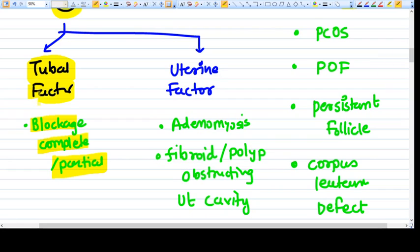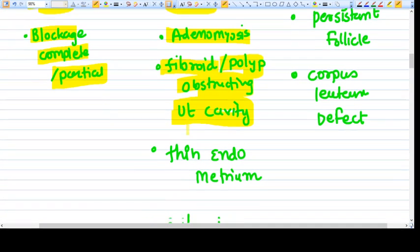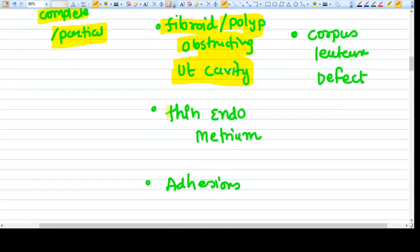Other factors are related to the uterus — if the uterus has severe adenomyosis, fibroid, or endometrial polyp causing obstruction to the uterine cavity, these also contribute to uterine factor infertility. A very important aspect that undergraduate students often miss is thin endometrium, which is also a very important cause of infertility.